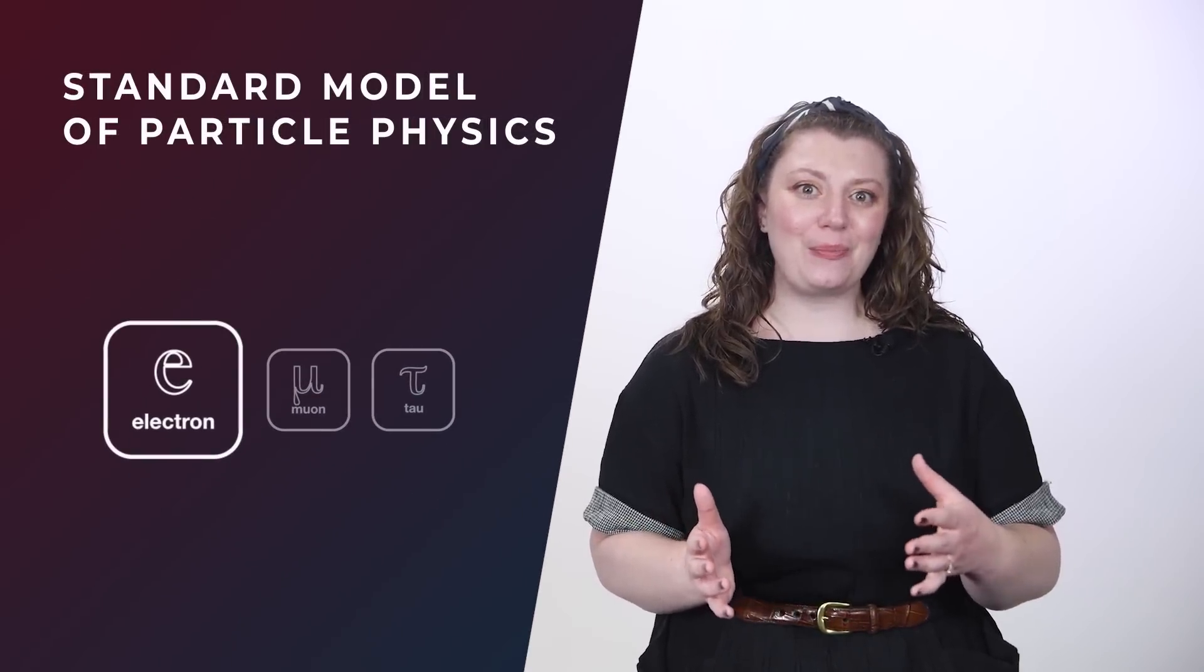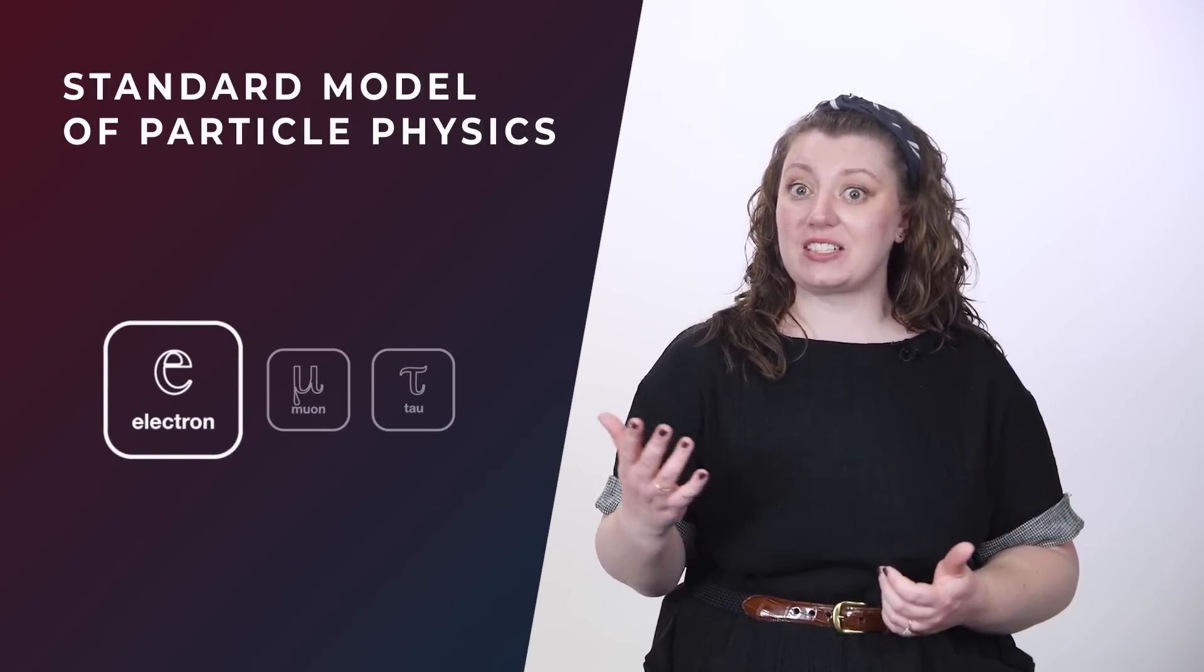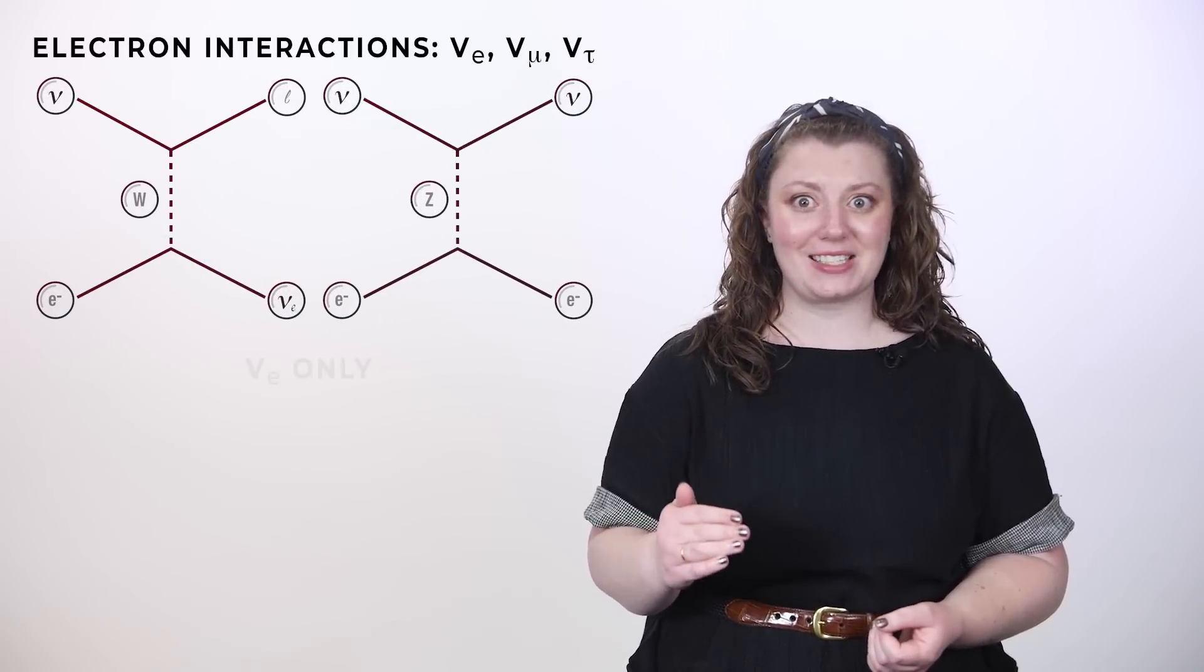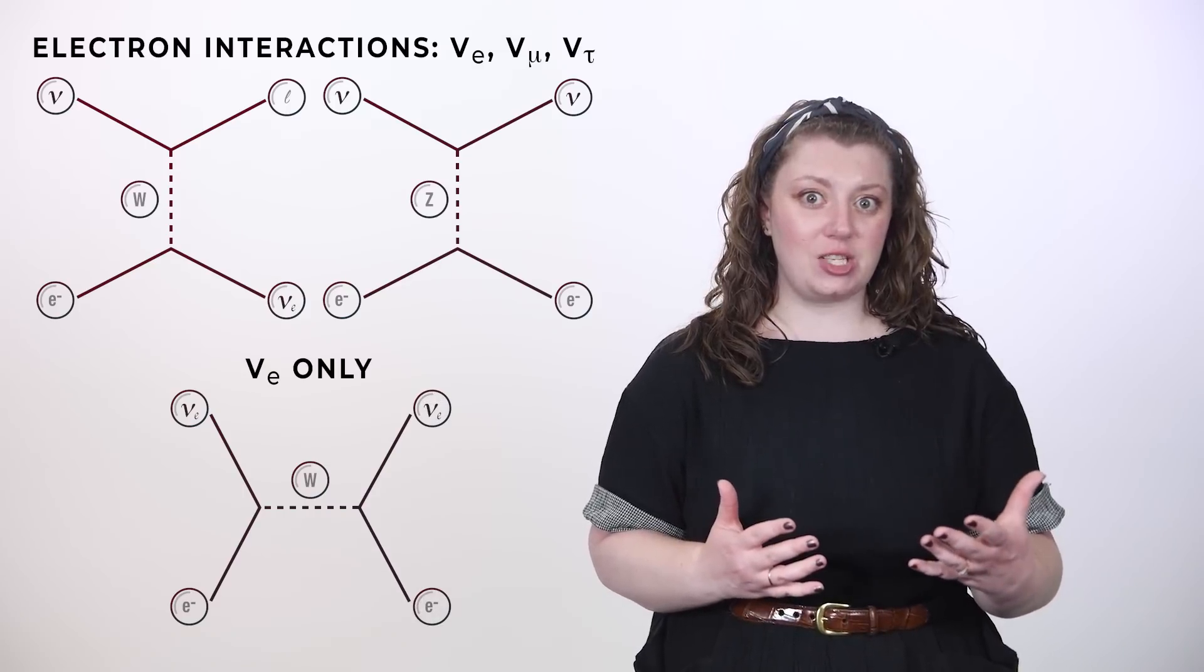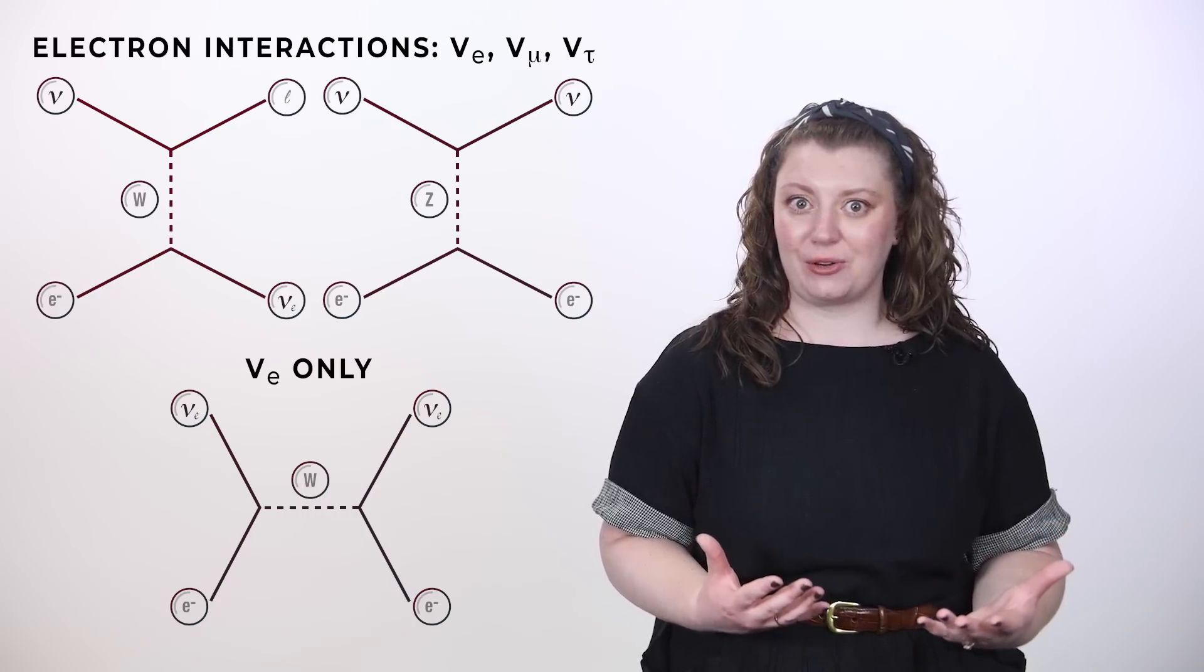One interesting thing to note: we've been talking about neutrinos more generally, but there's an extra special feature for electron neutrinos. As you know, matter contains electrons rather than their heavier cousins, the muon and the tau, which rapidly decay. The electron neutrino has a special extra possibility to exchange a W boson with the electrons in matter. This extra exchange possibility causes what you can think of as drag on the electron neutrino.